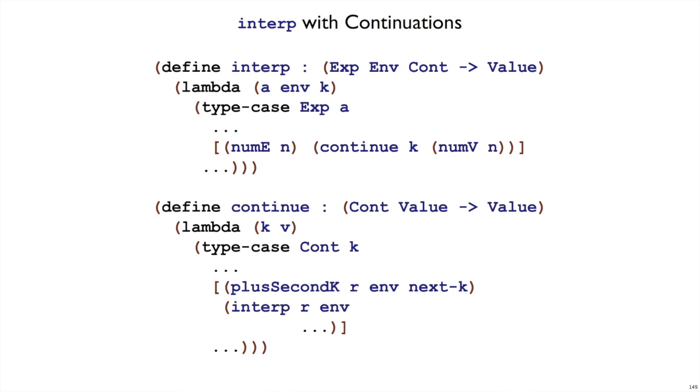On the other hand, the continuation might be plus second k, just like we saw in the earlier setup. In that case, plus second k is waiting on a value, and then it wants to start evaluating the r expression in some environment, and it has some rest of the continuation. That is, the to-do list at this point was apparently numplus a dot with interp r. So that's why we're going to continue with interping the r, that's going here, the dot dot dot, so the next k.